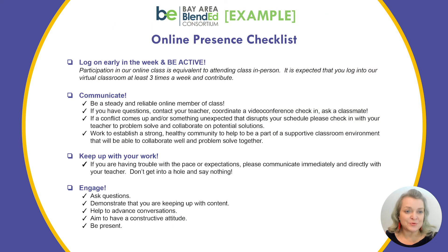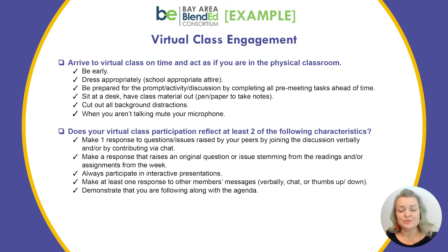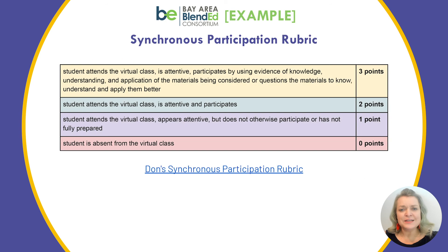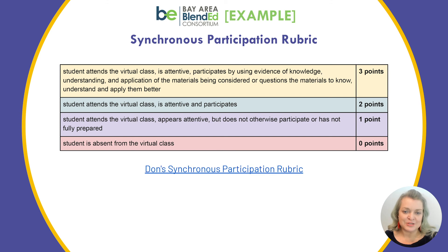Here's an example from a colleague who took inspiration from the first rubric and developed other checklists and rubrics based on it. This is an online presence checklist that looks at the big picture of how students participate and contribute to the class cohort. She also uses a checklist specifically for virtual class engagement, which she finds very helpful for letting students know what she's looking for from the very beginning. Here's yet another example — a synchronous participation rubric with a link to a fuller description of how it's used. All of these are available for you to look at, take inspiration from, and build your own system, whether a checklist or rubric that works well for you.